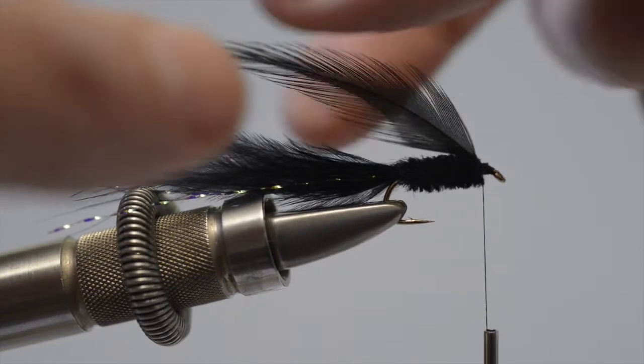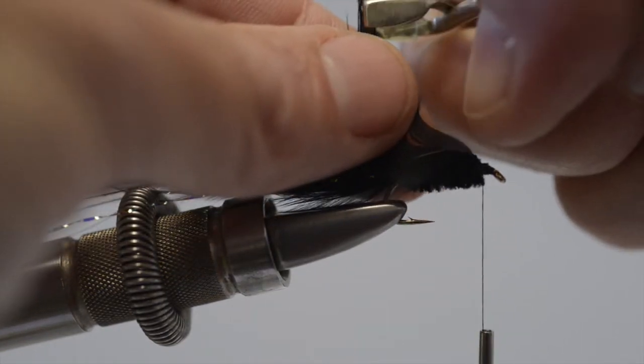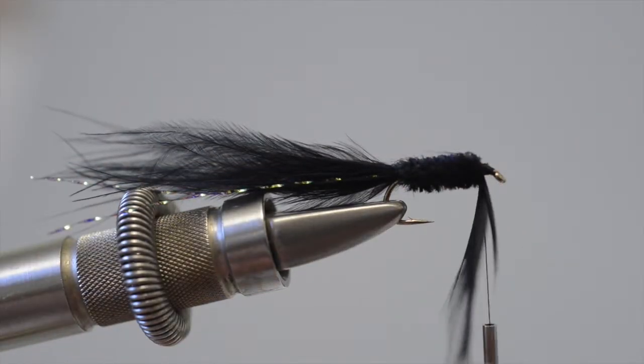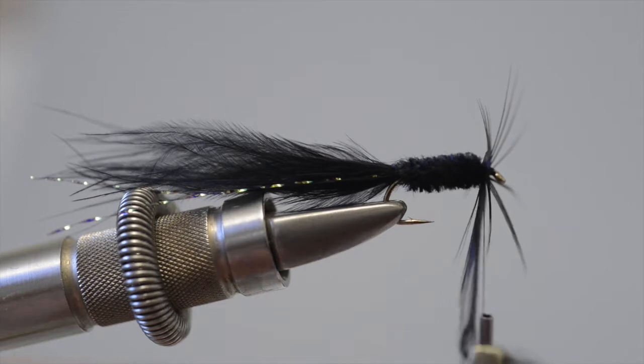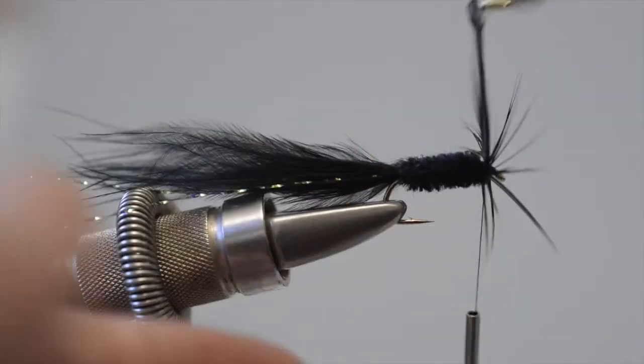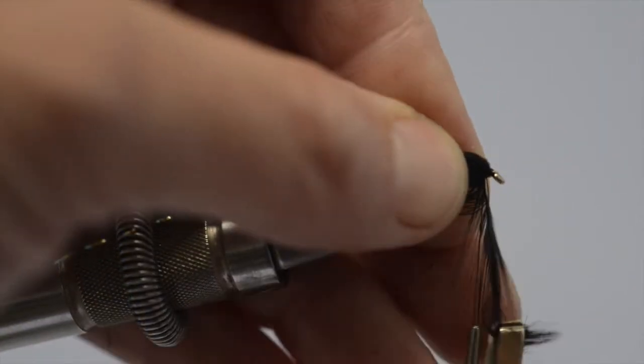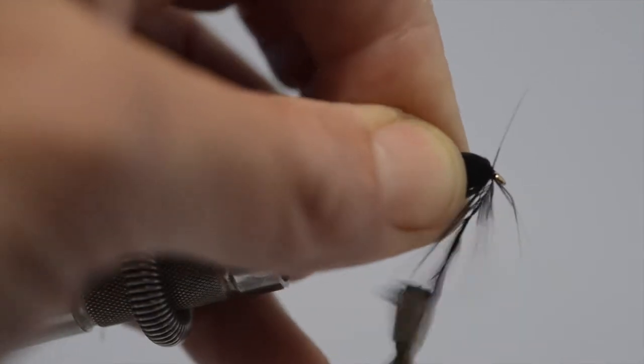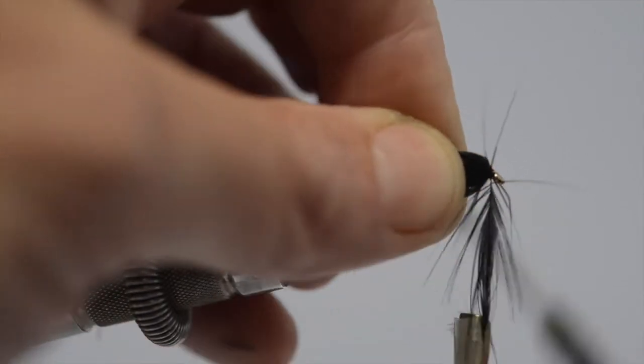Next, get hold of the hackle pliers, grab the tip of the hackle with those, and then wind on one, two turns of hackle, stroke the fibres back, bring the thread up over the tip, and secure it in place.